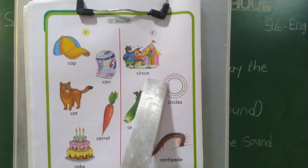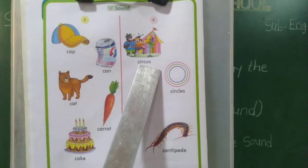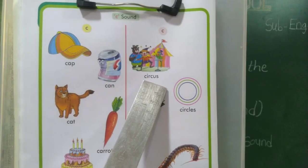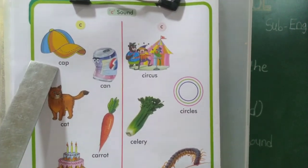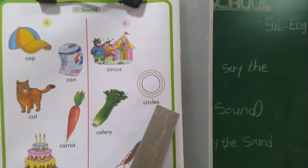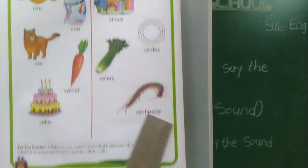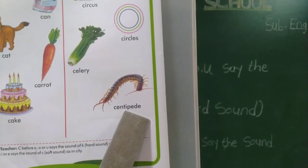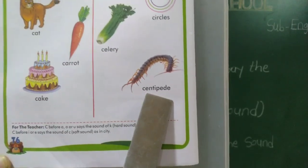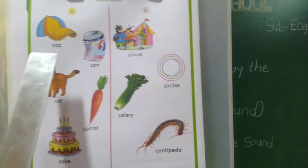C-I-R-C-U-S — circus. (Ithe C cha S sound ghetla aahe, that's why we say 'sir'.) C-I-R-C-L-E — circle. C-E-L-E-R-Y — celery. C-E-N-T-I-P-E-D-E — centipede. (He pronunciation centiped aahe.)